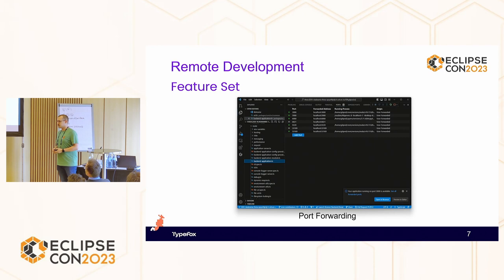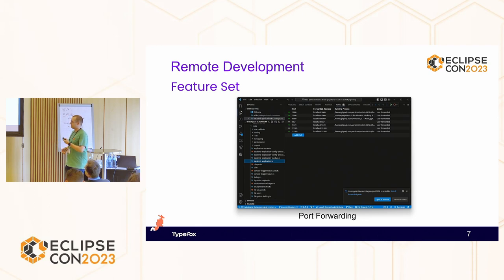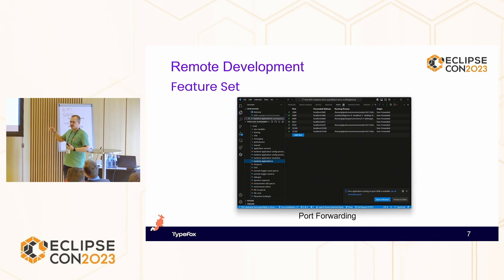And then we have port forwarding, which is interesting for the example I gave. I'm writing some Java backend system, and maybe my machine is quite locked off — I have a strong firewall and don't have any HTTP access to it. I only have some rudimentary SSH access on port 22. With port forwarding, even though I don't have actual HTTP access, I can forward all my remote ports that are open to my localhost. So on port 3000, my Theia application is running, and if I go to localhost 3000, I can see the application running even though the server is somewhere in the cloud.